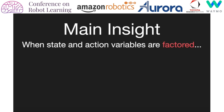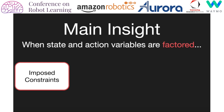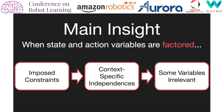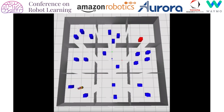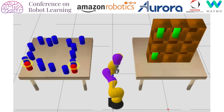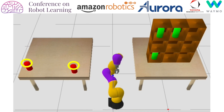When state and action variables are factored, imposing constraints induces context-specific independences, rendering some variables irrelevant to the task. These irrelevant variables can be ignored for faster planning. For example, in the NAMO domain, the constraint on rooms renders all variables pertaining to objects in the forbidden rooms irrelevant. In the sequential manipulation domain, the top grasp constraint renders the blue objects irrelevant, and the constraint on bins renders the green objects irrelevant.